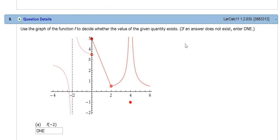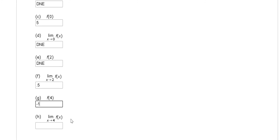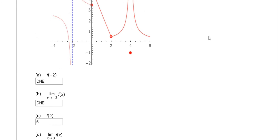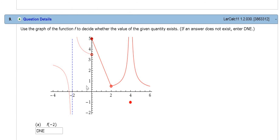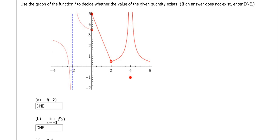In this problem, it says if an answer does not exist, enter DNE. Technically, if you were writing this down on a piece of paper and you wrote infinity, it would be correct. In fact, it would be even more correct than DNE. However, in this answer, we have to write down DNE simply because this question is telling us that if an answer does not exist, enter DNE. So infinity does not exist, so we enter DNE.